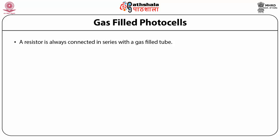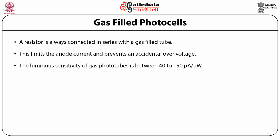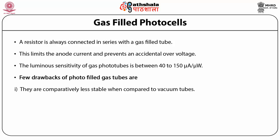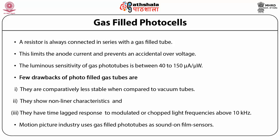A resistor is always connected in series with a gas filled tube to limit the anode current and prevent accidental overvoltage. The luminous sensitivity of gas phototubes is between 40 to 150 microamperes per microvolt. Drawbacks include: they are comparatively less stable than vacuum tubes, they show nonlinear characteristics, and they have a time-lagged response to modulated or chopped light at frequencies above 10 kHz. The motion picture industry uses gas filled phototubes as sound-on-film sensors.